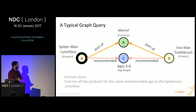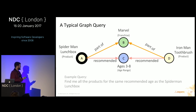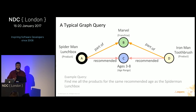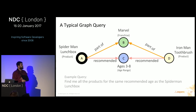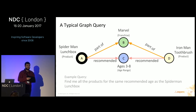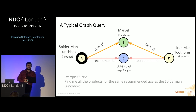What does a typical graph query look like? Here's a simple recommendation query: find all the products for the same recommended age as a Spider-Man lunchbox. You'd start at the Spider-Man lunchbox, walk out the 'recommended' edge to the age range of three to eight, and then look for any other inward-facing 'recommended' edges for that same age group. In this case, there's only one: the Iron Man toothbrush.